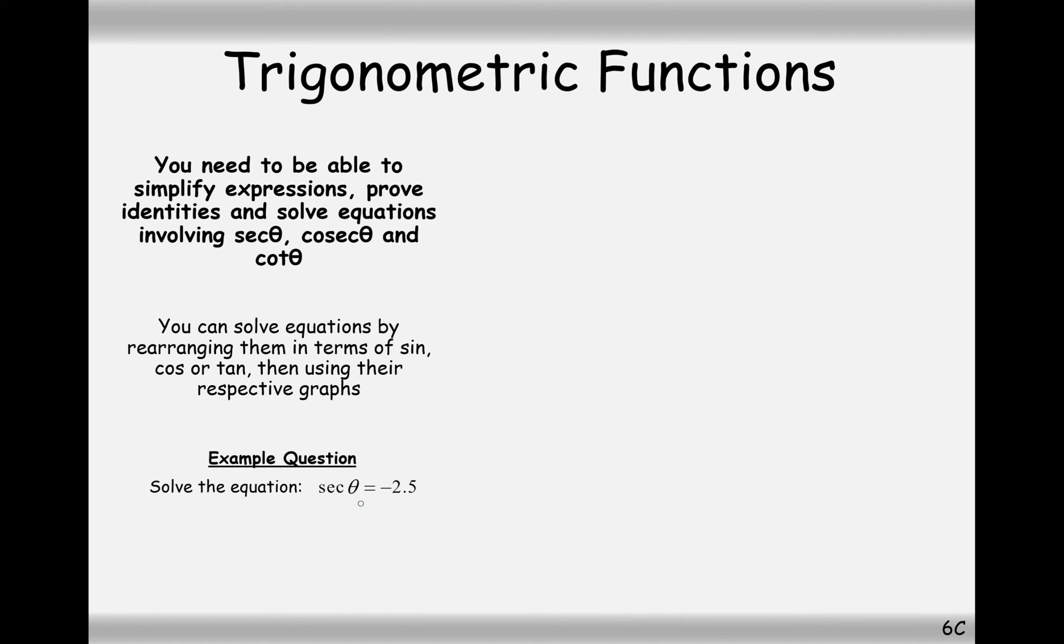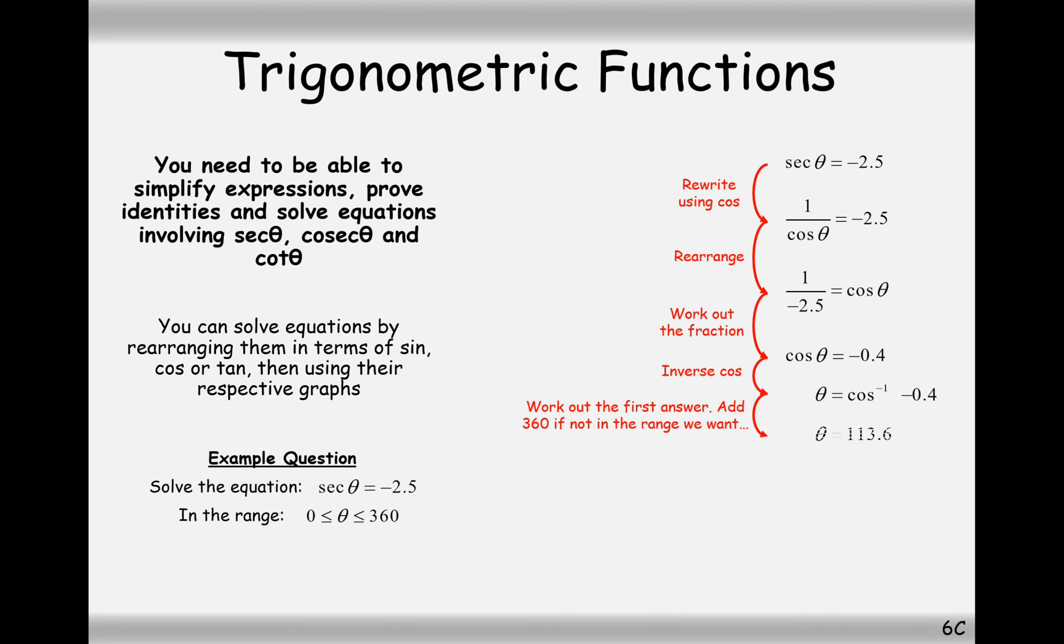Alright, then let's get on to solving some trig equations. Now, we've got sec theta here equals minus 2.5, in the range 0 to 360. The first thing I would do is rewrite sec as 1 over cos. And now we're going to rearrange a little bit. I'm going to times both sides by cos and divide by minus 2.5. Work out what this fraction is, and yet cos theta equals minus 0.4. So, now I've got a basic lower-sixth AS-level trig equation I need to solve here.